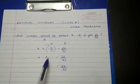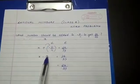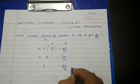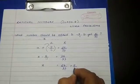This minus 5 by 11, when we shift it from left hand side to right hand side, it will become plus 5 by 11.